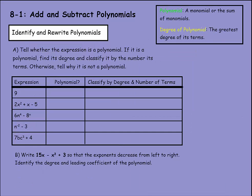So let's put this to use. It says, tell whether the expression is a polynomial. If it is a polynomial, find its degree, and then classify it by the number of its terms. Otherwise, tell us why it's not a polynomial. First we have this expression 9. Is that a polynomial? Yes, a number is a polynomial. What is its degree? Well, there's no variable, so it's the 0 degree. And then this would just be a monomial. So we'll say 0 and then monomial, because it's only one term.